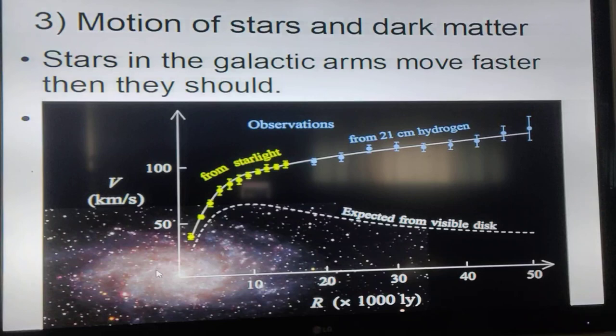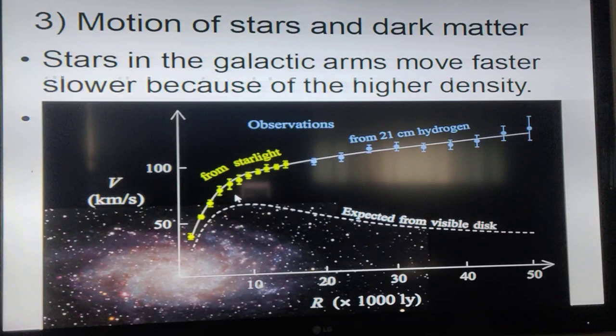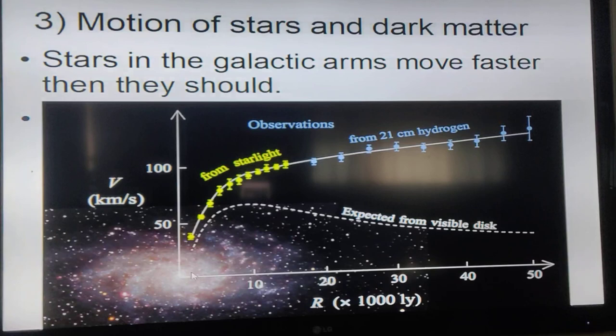The stars are orbiting the black hole. They feel the gravity from the black hole and have a certain speed around it. If you go farther from the black hole, then the stars orbiting in this region feel not only the black hole but whatever stars are in between. So they're going faster and faster. The further you go within the bulge, the faster the stars go. The problem is when you go into the arms.